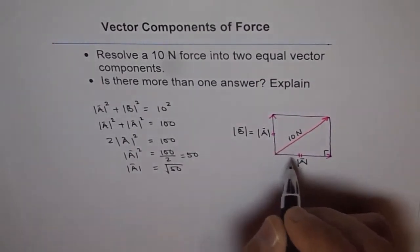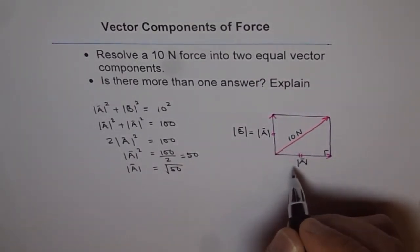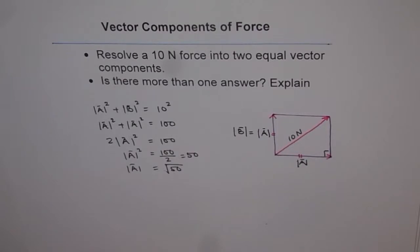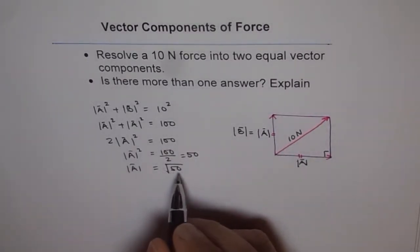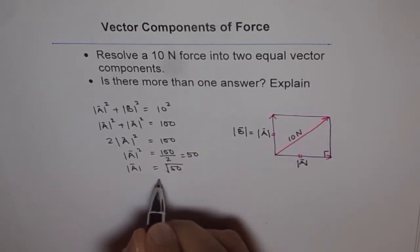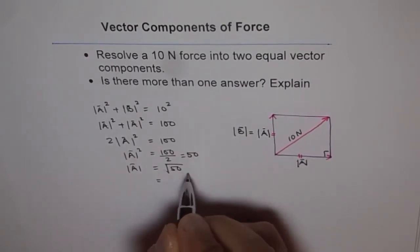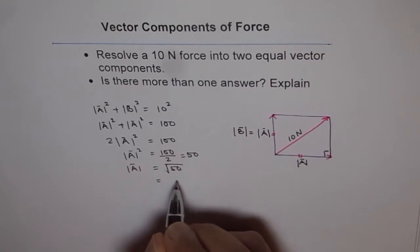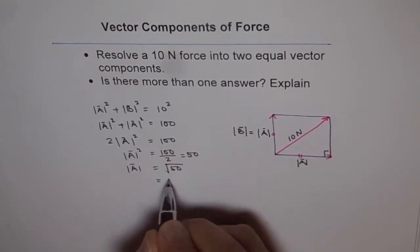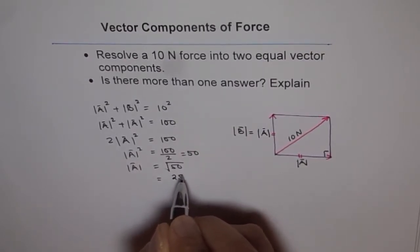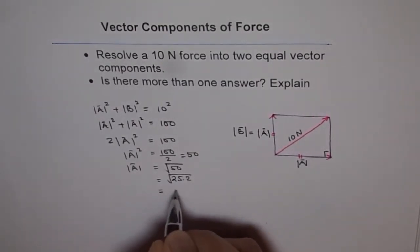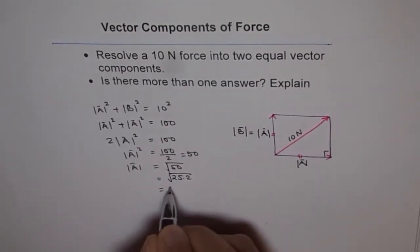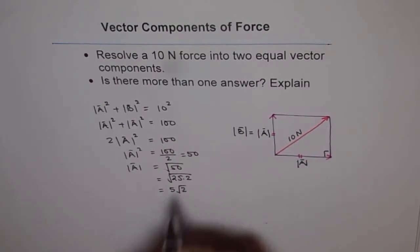So we get a square whose sides are square root of 50. Square root of 50 equals square root of 25 times 2, which we can write as 5 square root of 2. So the magnitude of each component is 5√2 Newtons.